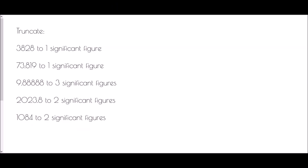Next we're going to look at truncating to significant figures. For significant figures, we must remember that a significant figure is the first digit which is not a zero. In the first number we have 3828 — the first significant figure is the 3, and therefore we are cutting off after that point. This is truncating so the 3 remains exactly as it is, but everything else just becomes zero, so we truncate it to 3000.